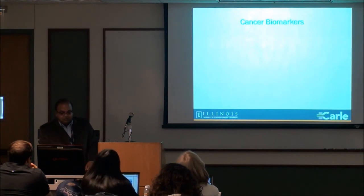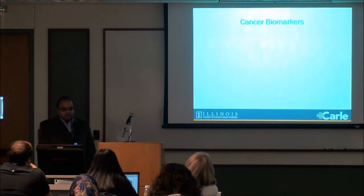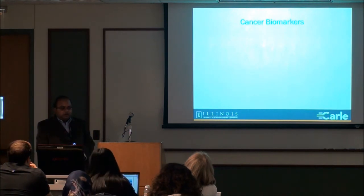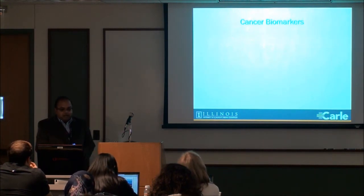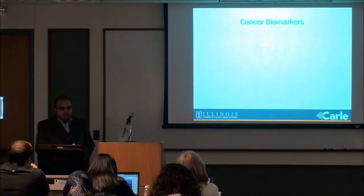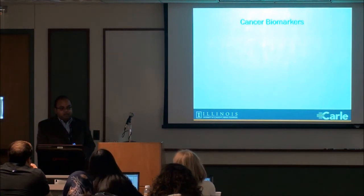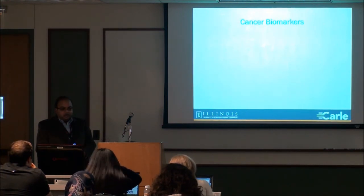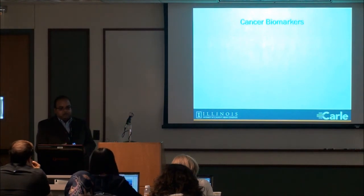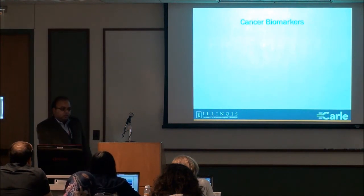What are cancer biomarkers? Biomarkers are things we can measure that help tell us whether someone is prone to developing cancer, already has cancer, has a certain type of cancer, how progressed their cancer is, and whether — if they're getting treatment — that treatment is really working for them or not. So there's obviously not one type of biomarker; there are several different types.